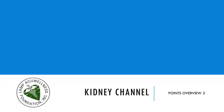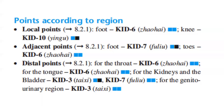Let's now cover the second part of the points overview of the kidney channel. Points according to region: local points — foot: Kidney 6; knee: Kidney 10. Adjacent points — foot: Kidney 7; toes: Kidney 6. Distal points — throat: Kidney 6; tongue: Kidney 6; kidneys and bladder: Kidney 3 and Kidney 7; genitourinary region: Kidney 3.